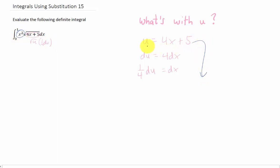Well, fortunately, we can solve this equation here for x. Subtracting 5 from both sides and dividing by 4 gives us that x is the quantity u minus 5 divided by 4.